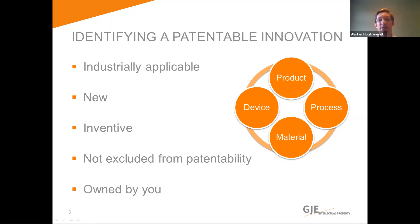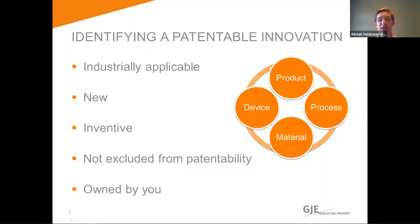What then needs to be done is to look at the requirements the law imposes on innovation to qualify for receiving patent protection. Those requirements are the ones listed here on this slide. If you work your way to the end of this list for an innovation you have had and each step is positive, then you may well be on to something that is patentable. I'm going to cover each of the items on this slide in a bit more detail over the next few slides.